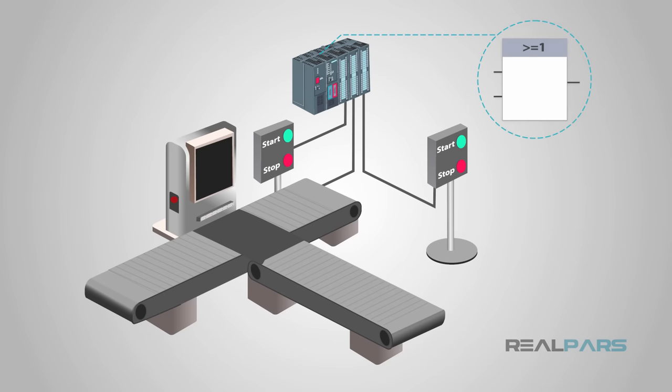Machines may use OR logic when there are more than one set of controls to operate the machine. Conveyor belts can utilize this programming. They will commonly have the start and stop buttons located near the conveyor. They can also have a start and stop button at another location in order to start the conveyor remotely.